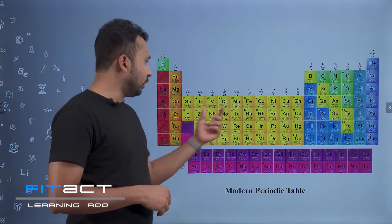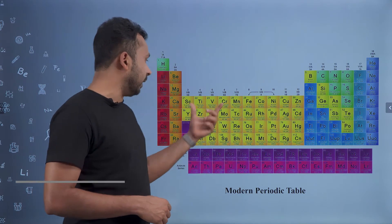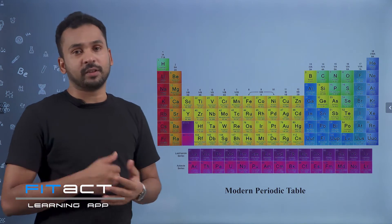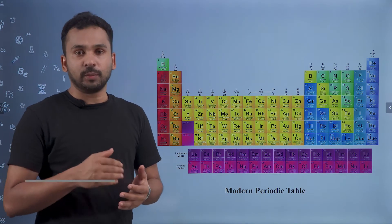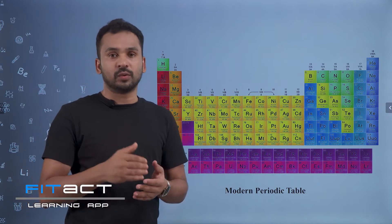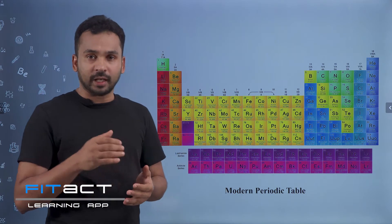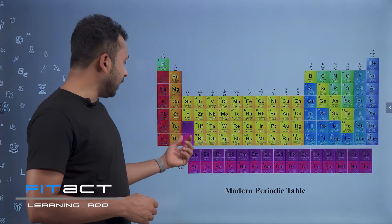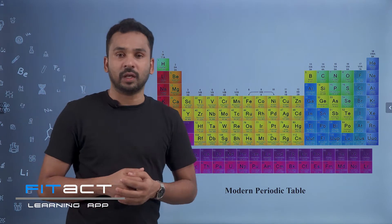The 3 to 12 group elements are transition elements. In the 6th period, atomic numbers 57 to 71 are lanthanides, and in the 7th period, atomic numbers 89 to 103 are actinides.